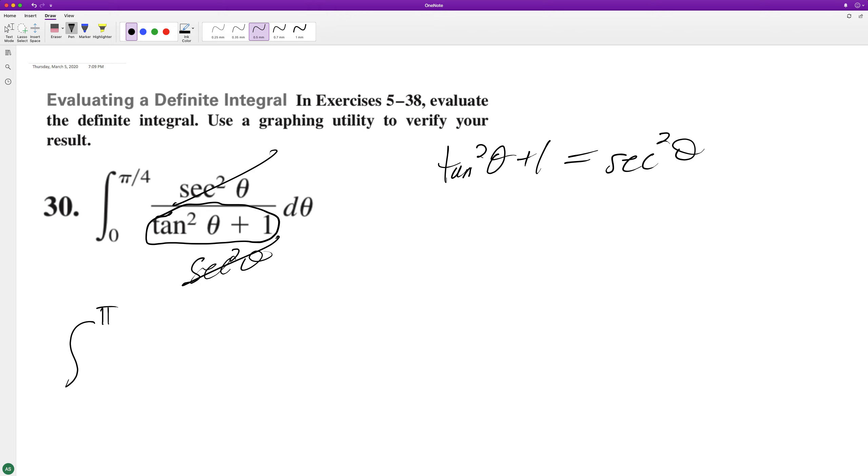So then we're integrating from 0 to pi over 4, 1 d theta. And when we integrate this, we end up with theta from 0 to pi over 4.